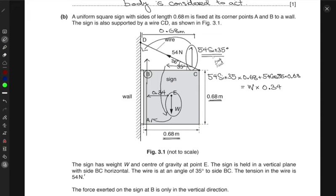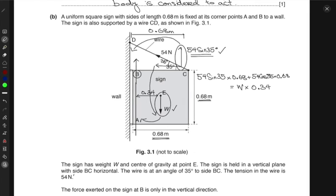So if I take this component and subtract the weight from it, I get the net force. That would be the total net force acting on point A and B, which has this component: 54 sine 35 minus W.